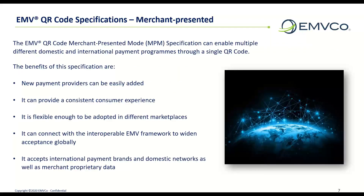The EMV QR code merchant-presented specification can enable account-based payment as well as card-based payment. This increases the interoperability, efficiency, and flexibility of QR code deployments based upon the EMV specification. It also increases choice and participation for all parties and can work in any marketplace. Most importantly, for merchants, this means it simply provides one QR code for all the payment providers they accept, and avoids the need to show multiple QR codes in their store. This acceptance provides a wider and more inclusive, consistent experience for both merchants and consumers.